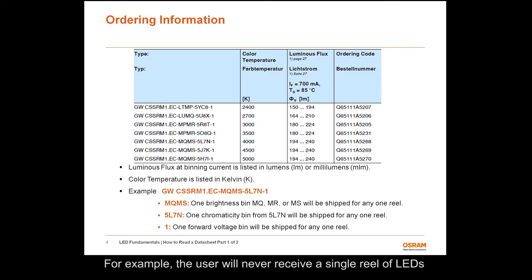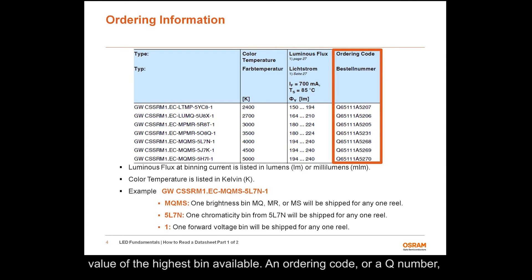For example, the user will never receive a single reel of LEDs that contains a mixture of MQ and MR brightness groups. The luminous flux min to max range for each part number indicates the minimum value of the lowest bin to the maximum value of the highest bin available. An ordering code, or a Q number, is assigned to each part number and is generally used to enter sample order requests for specific part numbers.